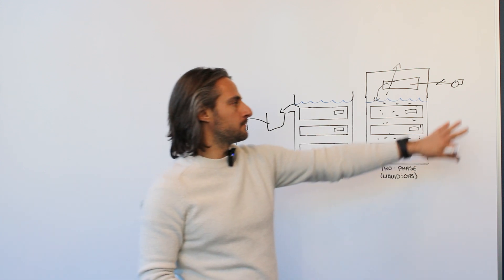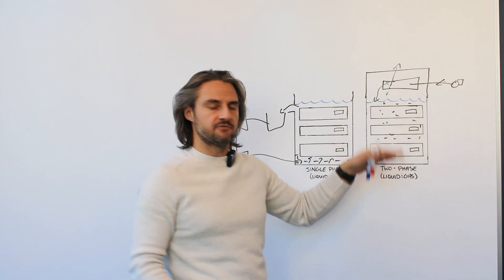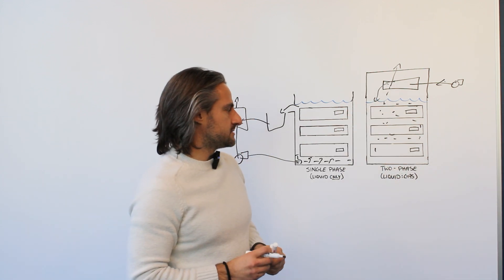It's a pumped liquid loop. We pump a coolant into this heat exchanger. It's colder than the fluid is and so we can condense the vapor and allow this system to operate.